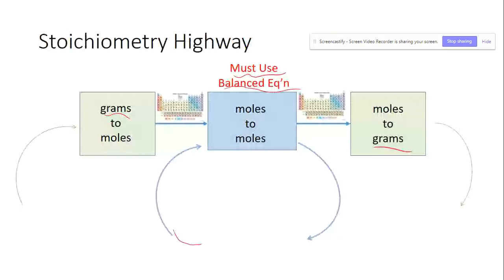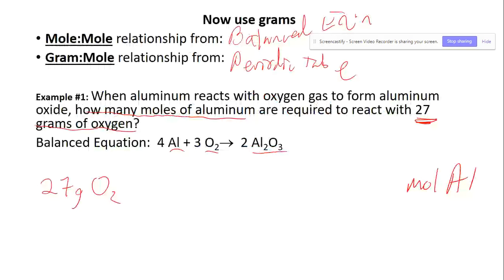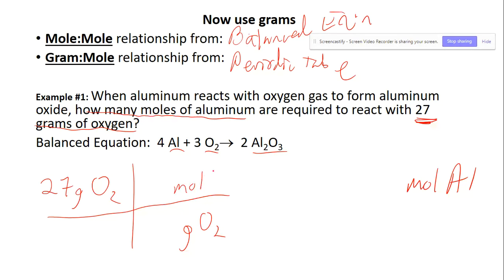Looking at our roadmap, we're starting with grams, so we'll need a periodic table conversion. We'll always need the mole-to-mole conversion, and then we're getting off at moles of aluminum — no need to go back to grams. We start with our given and cancel grams of oxygen. We can't go directly from grams of oxygen to moles of aluminum, but we can get the moles of oxygen.